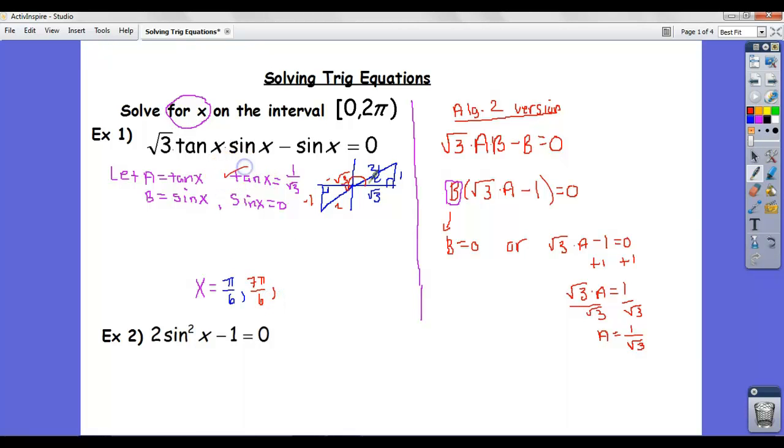So those answers, those are the ones that came from this guy, and then the other piece that's producing answers is sine of x equals 0. Well, where does sine of x equal 0? If we look at our unit circle, sine of x equals 0 at 0 and at π. So the other two answers are 0 and π. Okay, so once you get the factoring done, that's when you do the trig. Let's look at another example.